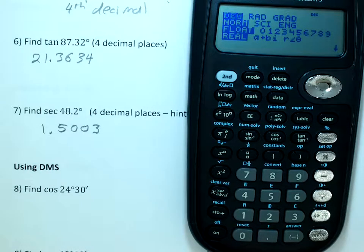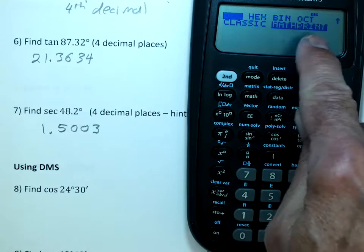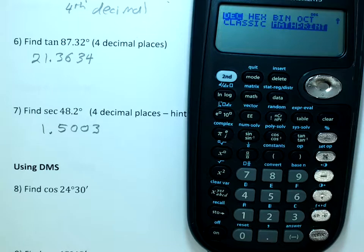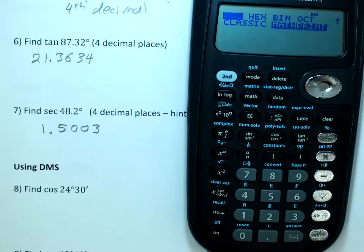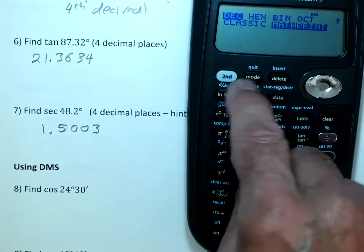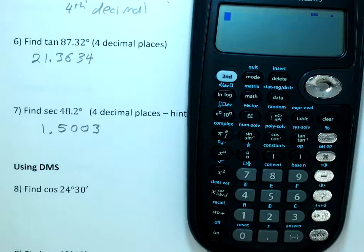Make sure your calculator is in degrees. Also, I'm in what's called math print mode instead of classic. In classic mode, those conversions from radical to decimal and from fractions to decimal work differently. I stick to math print because then that little button works. Whenever you want to exit the menu, hit second then quit to get out, and you're back.